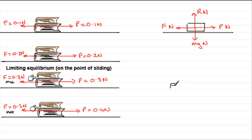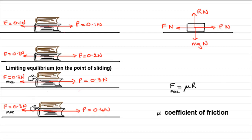The frictional force f can be shown to be a fraction of the normal contact reaction r. This fraction is called the coefficient of friction, mu, for the two surfaces in contact. If the surface is smooth, mu equals 0. But f only reaches this value when it's either on the point of sliding or actually moving. So we have f max equals mu r, and mu is called the coefficient of friction. It's very important to realise that before limiting equilibrium, f is less than mu r. But at limiting equilibrium and when sliding, f equals mu r.